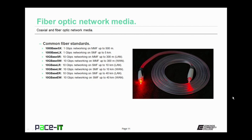Some common fiber standards: 1000Base-SX is 1 gigabit per second networking on multi-mode fiber up to 500 meters. 1000Base-LX is 1 gigabit per second networking on single mode fiber up to 5 kilometers. Then there's 10GBase-SR — 10 gigabits per second networking on multi-mode fiber up to 300 meters using a LAN type connector. There's also 10GBase-SW, 10 gigabits per second on multi-mode fiber up to 300 meters, but using a wide area network type connector.